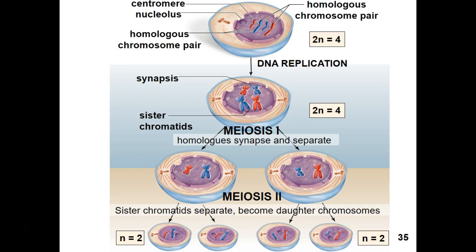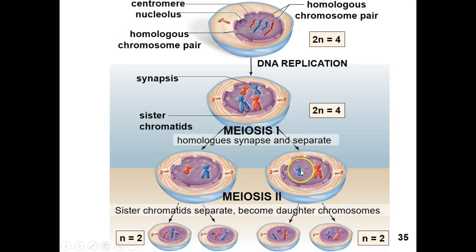A figure in your textbook starting on page 90 shows the full meiosis process — starting with a diploid cell, going through meiosis 1 to produce two cells, and then through meiosis 2. What we didn't show in that figure is crossing over, which occurs during prophase 1.